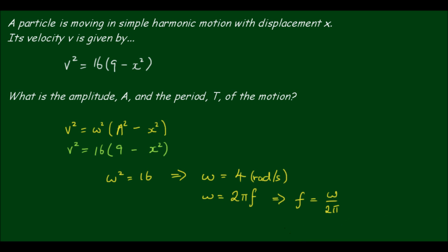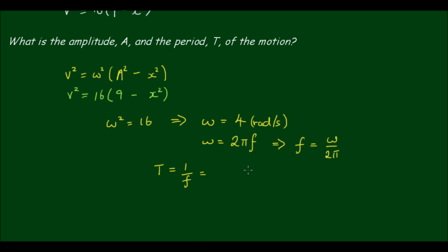So that implies that f is equal to omega divided by 2 pi. And the period T is equal to 1 divided by the frequency f, and this is simply equal to the reciprocal of this, so it'll be 2 pi divided by omega. So the period of the motion is 2 pi divided by 4, which equals pi on 2.